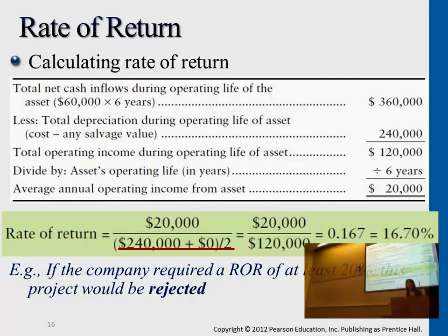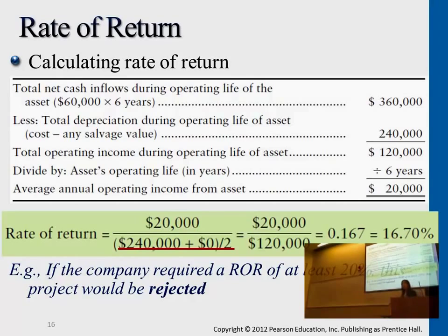For each and every problem given to you, you'll be given what is the desired rate of return. You compare this particular project against that desired rate of return. If it exceeds it, you accept the project. If it's lower, you decline it.